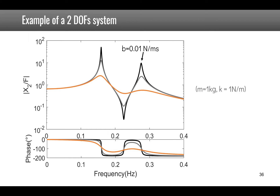Looking at the response for b = 0.01 N/(m·s) in black, as we increase damping the two peaks decrease as seen for single DOF systems. Note that the second peak appears more damped than the first — we will come back to this shortly.